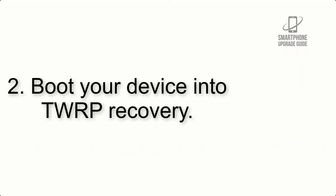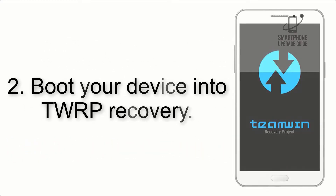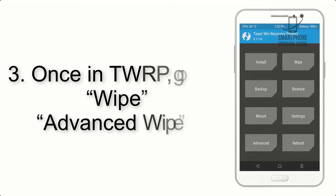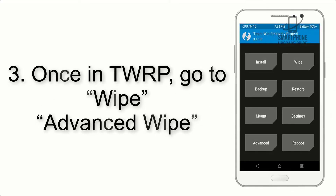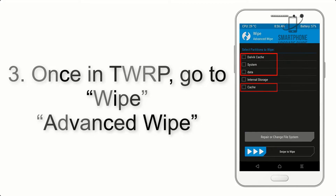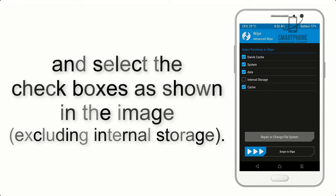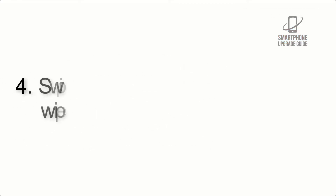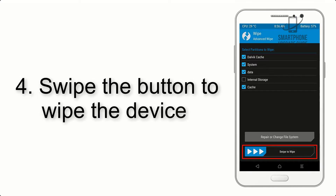Step 2: Boot your device into TWRP recovery. Once in TWRP, click on Advanced Wipe and select the checkboxes as shown in the image, excluding internal storage.